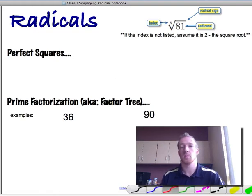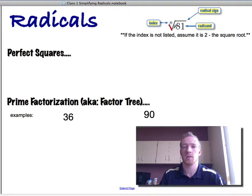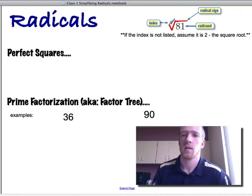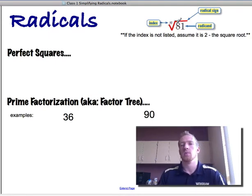Hi guys, we're beginning our unit on radicals. So a radical is anything that has one of these. This is the radical sign, the radicand is the thing underneath, and the index tells us what root we're taking.